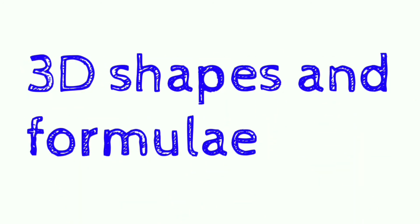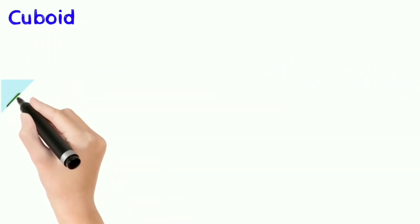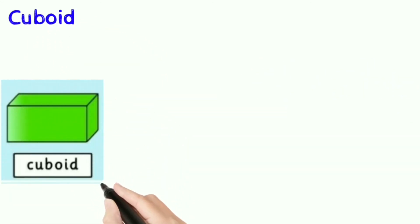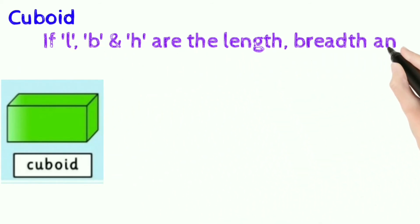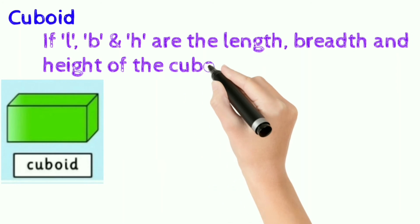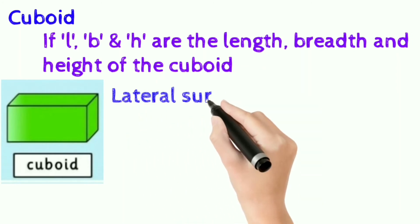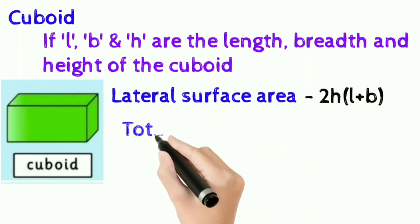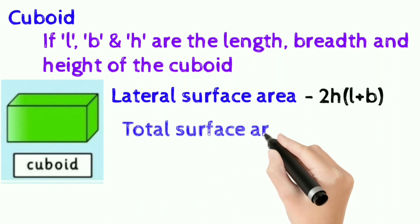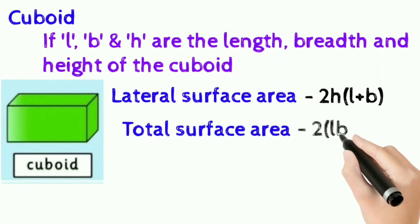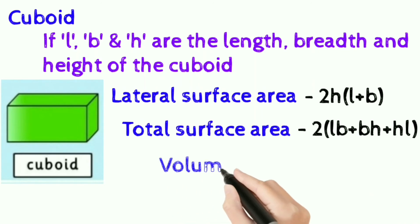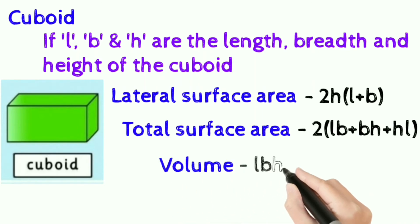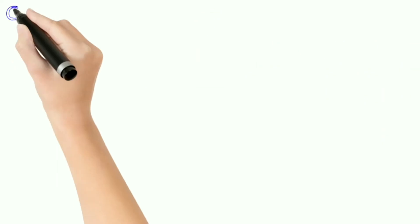3D shapes and formulae. Cuboid: if l, b, and h are the length, breadth, and height of the cuboid, lateral surface area is 2h into (l plus b), total surface area is 2 into (lb plus bh plus hl), and volume of the cuboid is l times b times h.